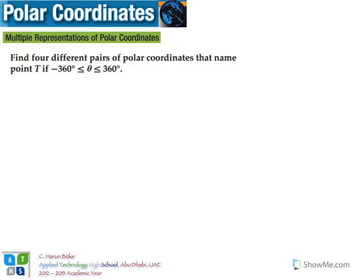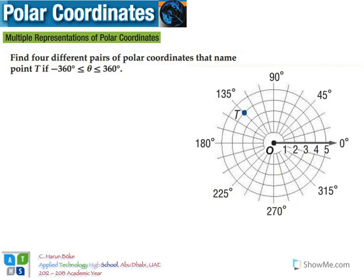Now, the question says, find four different pairs of polar coordinates that name the point T if the angle θ between the polar axis and the point is between minus 360 degrees and 360 degrees. Now, before you ask teacher what T, here is T on the polar grid. Now, we want to express this with four different pairs of polar coordinates. Now, the first one is obvious, which is (4, 135°).